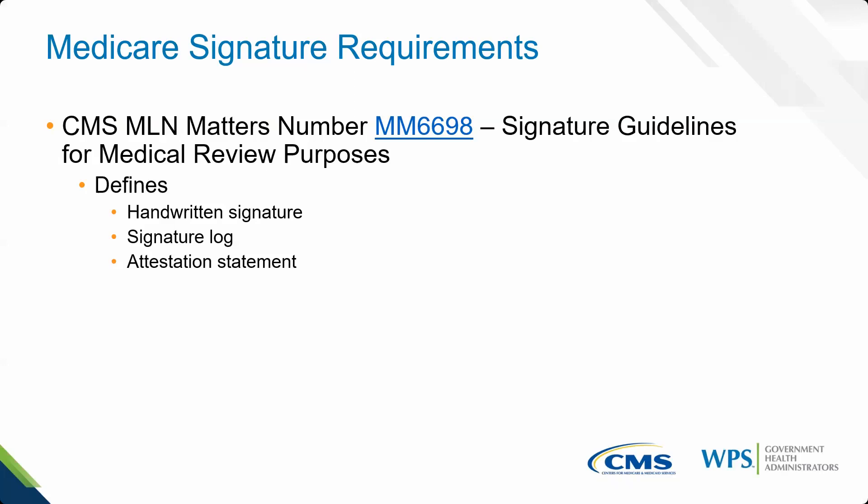For an attestation statement to be considered valid for Medicare medical review purposes, that statement must be signed and dated by the author of the medical record entry and must contain the appropriate beneficiary information. Claim reviewers will not consider an attestation statement where there is no associated medical record entry, or from someone other than the author of the medical record entry in question. Even in cases where two individuals are in the same group, one may not sign for the other in medical record entries or attestation statements. If a signature is missing from an order, like a lab order, claim reviewers will disregard the order during review. An attestation statement cannot be used for unsigned orders.